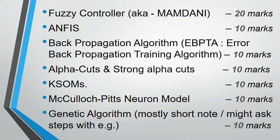Next we have Kohonen Self-Organizing Maps, also known as KSOMS. In the paper, they may ask you to explain KSOMS and then explain SOMs in detail, or they may simply ask you to explain KSOMS in detail. This is typically a 10-mark question.